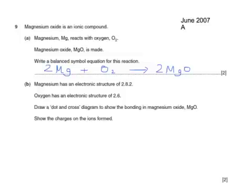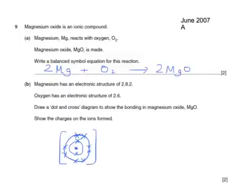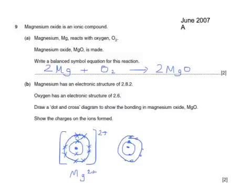Now we're told that magnesium has an electronic structure of 2, 8, 2 and oxygen 2, 6. Draw a dot and cross diagram to show the bonding in magnesium oxide and charges. Well, the magnesium has 10 electrons arranged as 2, 8, but it's lost its two outer electrons — so it now has a 2 plus charge for the magnesium. And for the oxygen, it was 2, 6, but of course it's gained two electrons to get a full shell, so it's now 2, 8, and having gained two electrons, it's now got a 2 minus charge — written as O 2 minus.